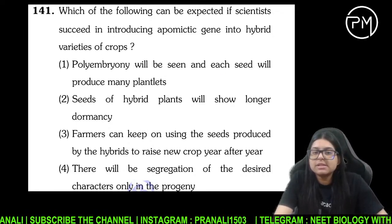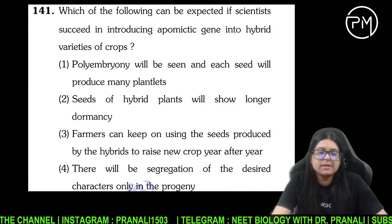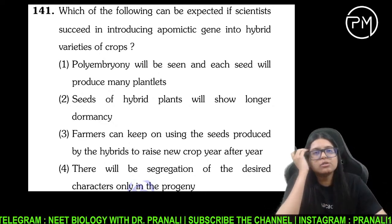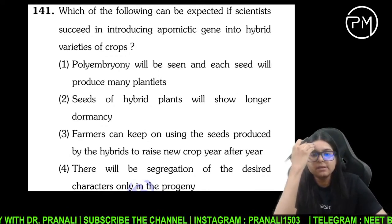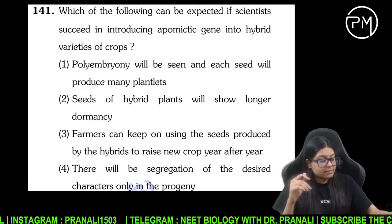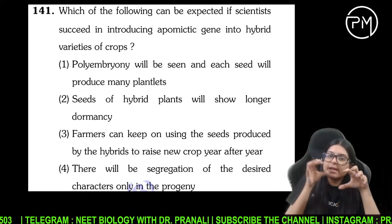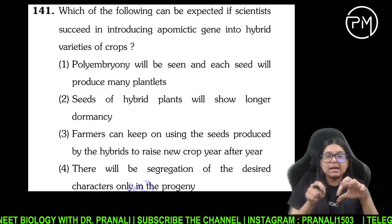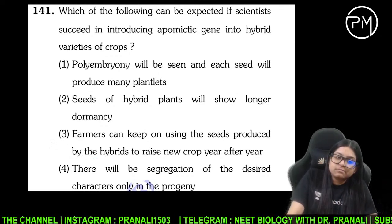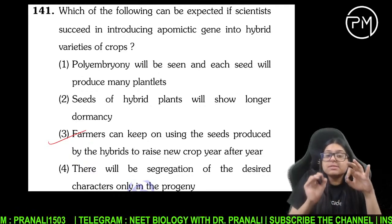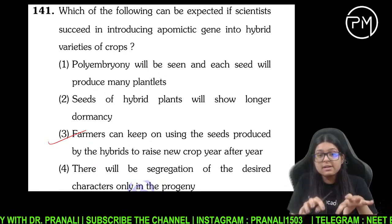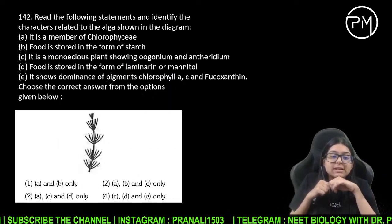Which of the following can be expected if scientists succeed in introducing apomictic variety? Apomixis kya hota hai — yeh asexual reproduction hai jo sexual reproduction ki copy karta hai. Matlab seed bana raha hai lekin asexual hai, toh jo genetic variability hai woh preserved hai. Farmer same seed ko har saal use kar sakta hai kyunki variation aaya hi nahi, kyunki asexual reproduction tha, par seed ban gaya kyunki copy sexual ki kar raha tha.